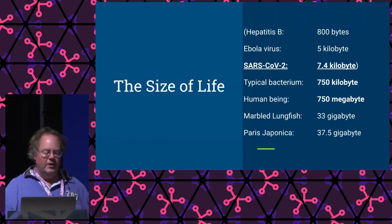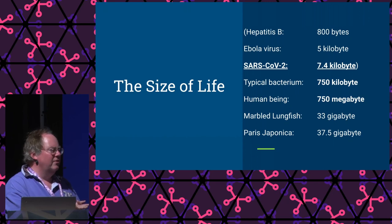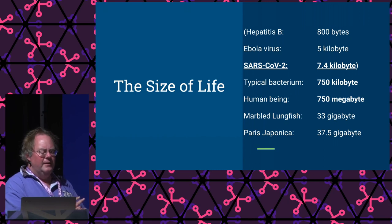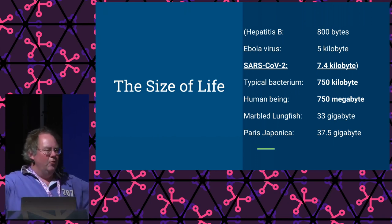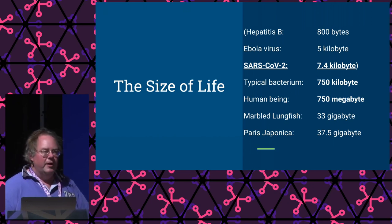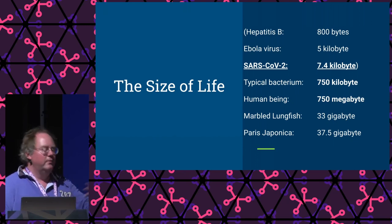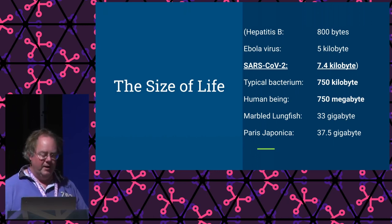How much DNA is there? Viruses can be around 800 bytes — true artists. 800 bytes can make you really ill and unhappy. SARS-CoV-2 is 7.4 kilobytes, almost certainly in the room with us right now, and it caused a little bit of disruption. A bacterium is 750 kilobytes — you can actually read through a bacterium's DNA and learn things. A typical human being is 750 megabytes of unique DNA, regardless of size.